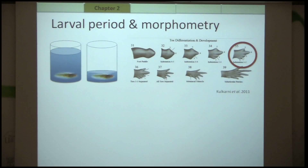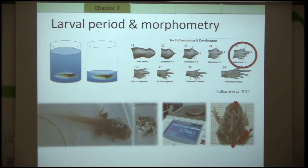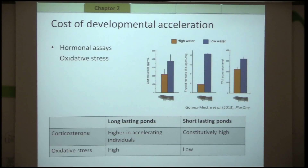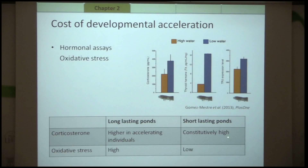All tadpoles are raised in high water until Gosner stage 35, when hind limbs are present and digits are differentiated, at which point I decrease the water level for half the treatment. Upon metamorphosis, I take data on larval period, weight, and morphometry. Developmental acceleration comes at a cost — achieved through high corticosterone levels, increased thyroid hormone levels, and increased thyroid hormone receptor levels. I expect that individuals from long-lasting ponds forced to accelerate development will show higher corticosterone and oxidative stress, whereas individuals from short-lasting ponds will have constitutively high corticosterone as an evolved mechanism, with subsequently lower oxidative stress.